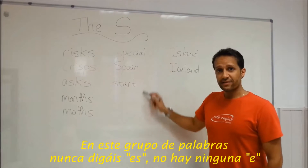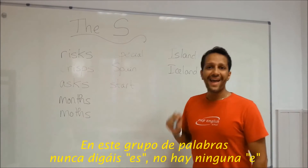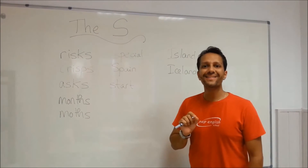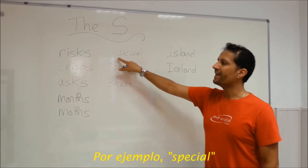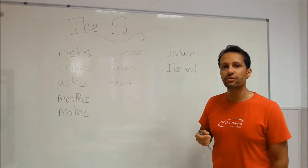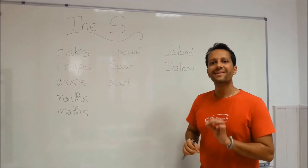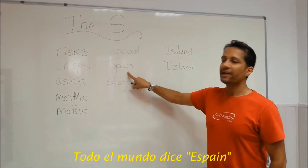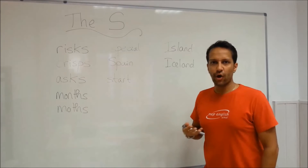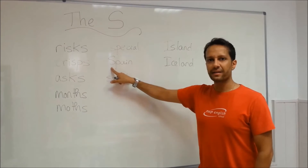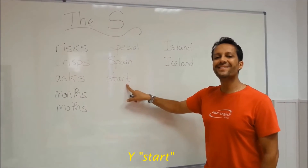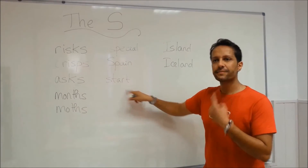In this set of words, don't say 'ES' — there's no E. It's only S. For example, 'especial' — say 'special,' not 'especial.' It's 'special,' starting with just S. España — everybody says 'eSpain,' but it's not. It's 'Spain.' And comenzar, empezar — 'start,' okay? Just S at the beginning.